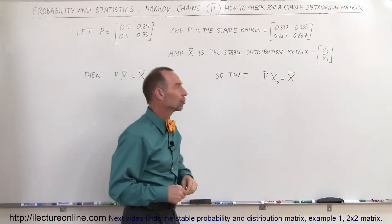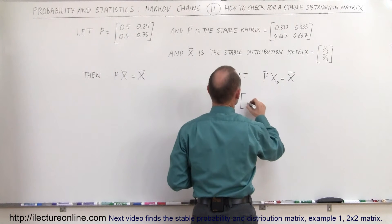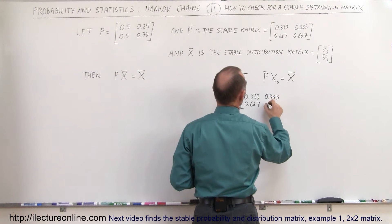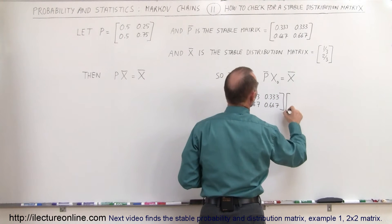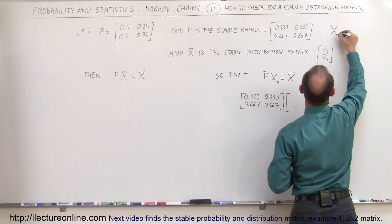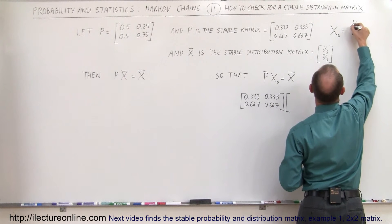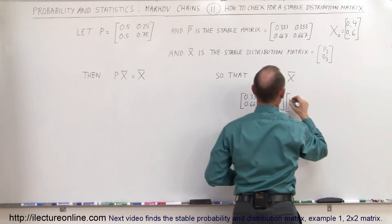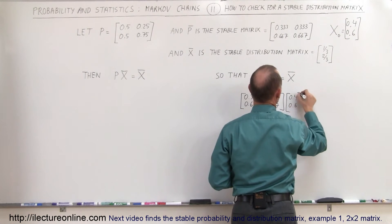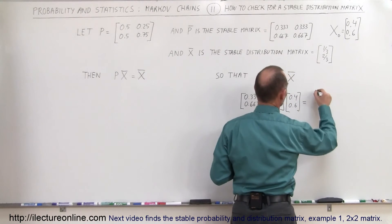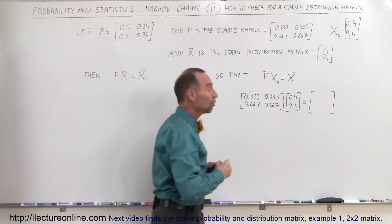Let's show that both of these are true. First, we'll take the stable distribution matrix — 0.333 and 0.667 — and multiply that times the initial matrix. The initial matrix is 0.4 and 0.6. Let's multiply that out and see what we get. We should end up with something that is the stable distribution matrix.